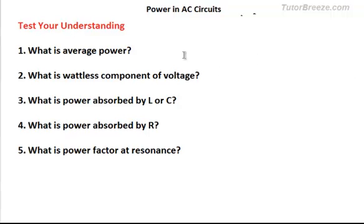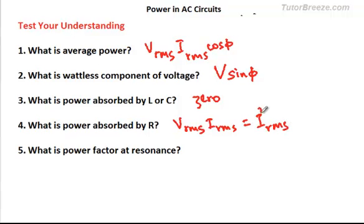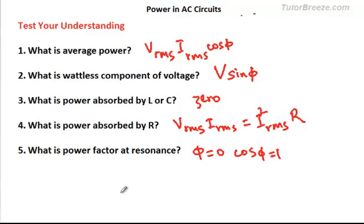To test your understanding: average power is Vrms × Irms × cos φ; wattless component of voltage is V sin φ; power absorbed by L or C is zero; power absorbed by R is Vrms × Irms = Irms² × R; and at resonance, φ = 0 so cos φ = 1, meaning power factor is one. If you got all answers right, give yourself a pat on the back. If not, go back and listen to the lesson again.